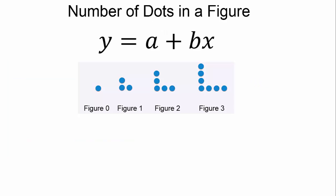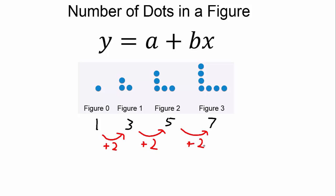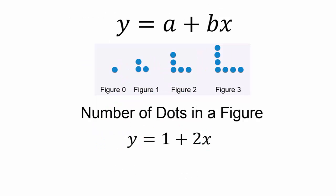Not everything has to be real world. Take a moment to write an equation that shows the relationship between the figure number and the dots. We are going to write the number of dots in each figure. We notice that the number of dots is increasing by 2 each time. So our equation will have a starting value of 1 and the coefficient of x will be 2. This equation tells us that we start with one dot and add two more dots each time.